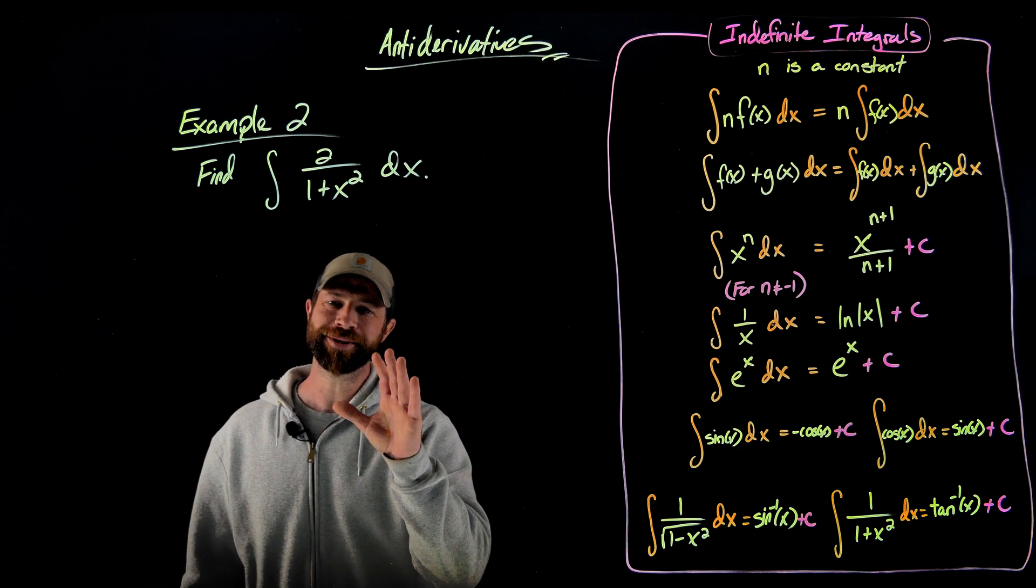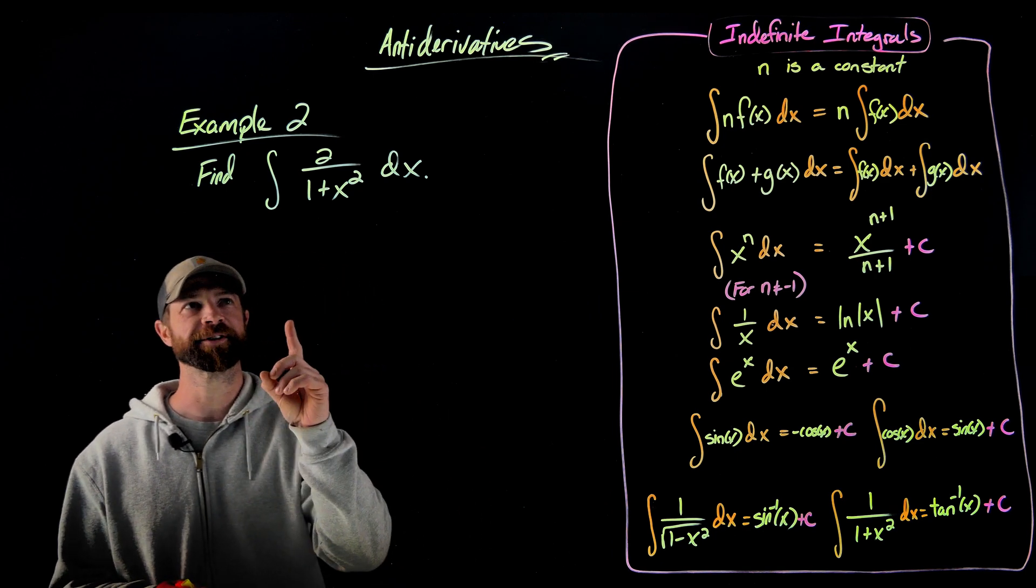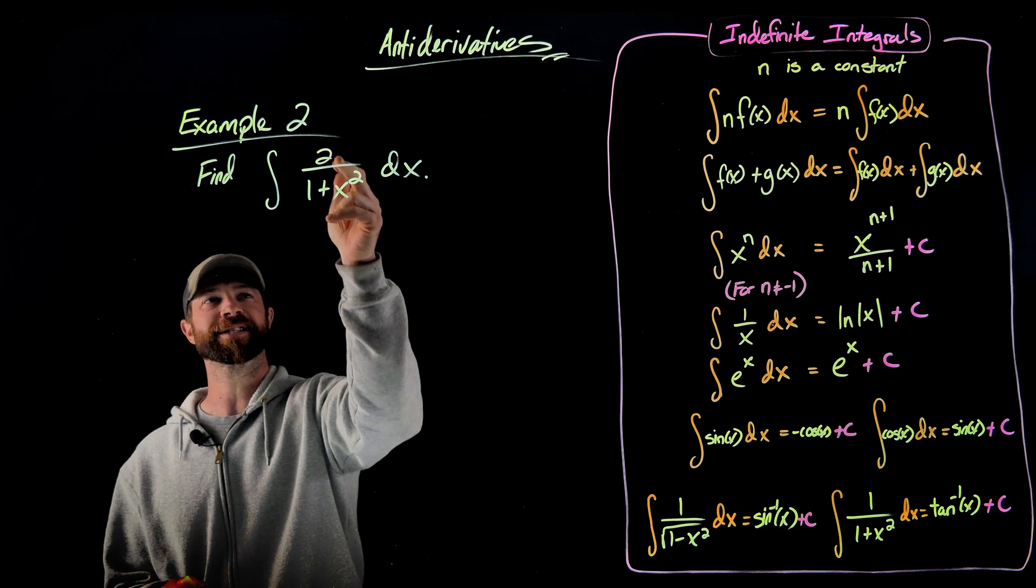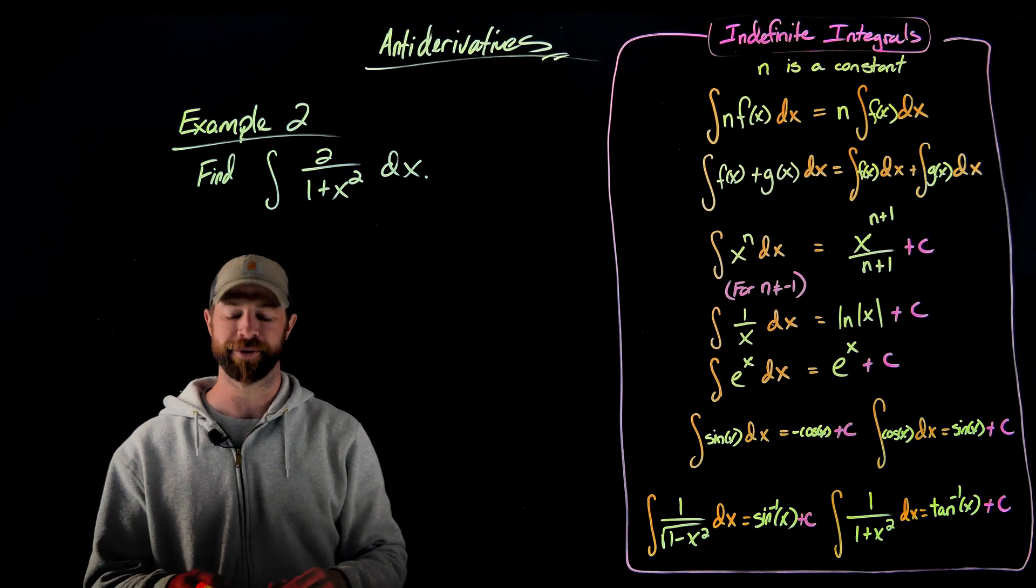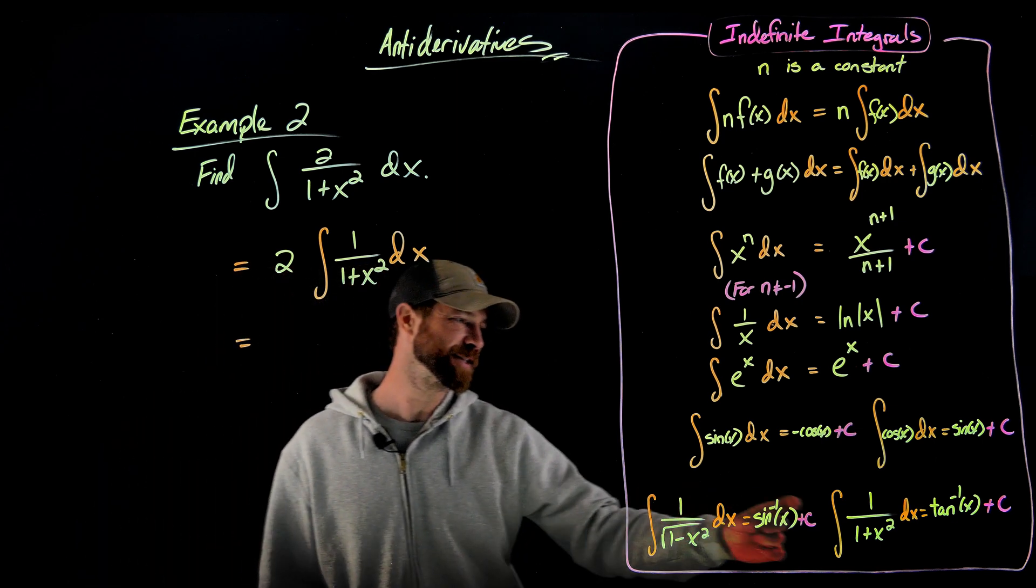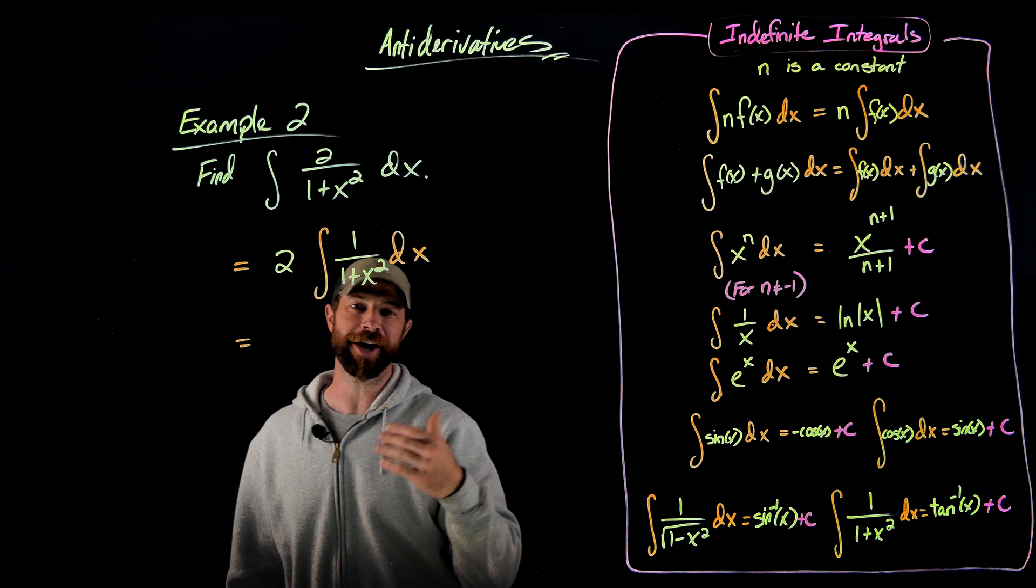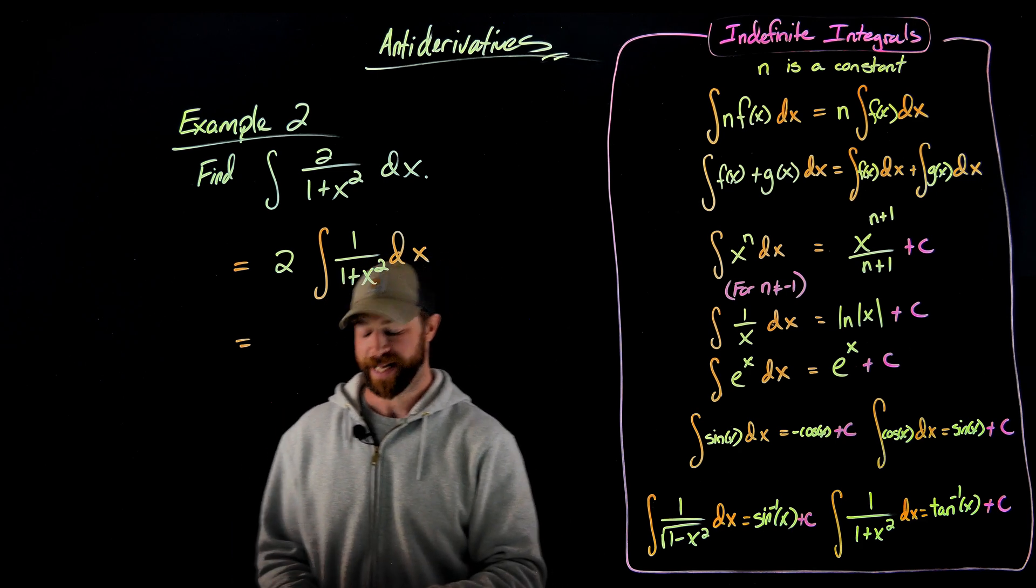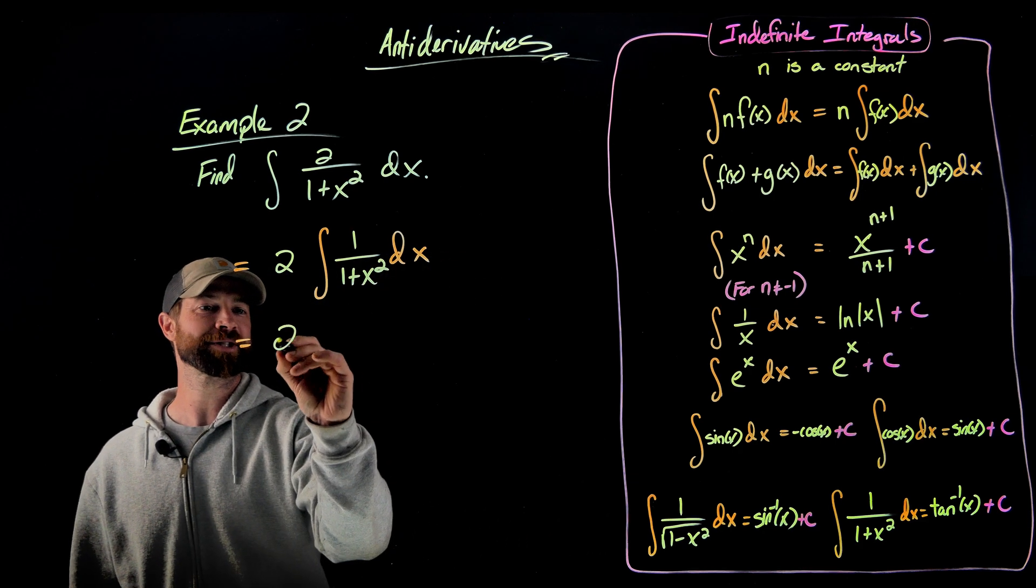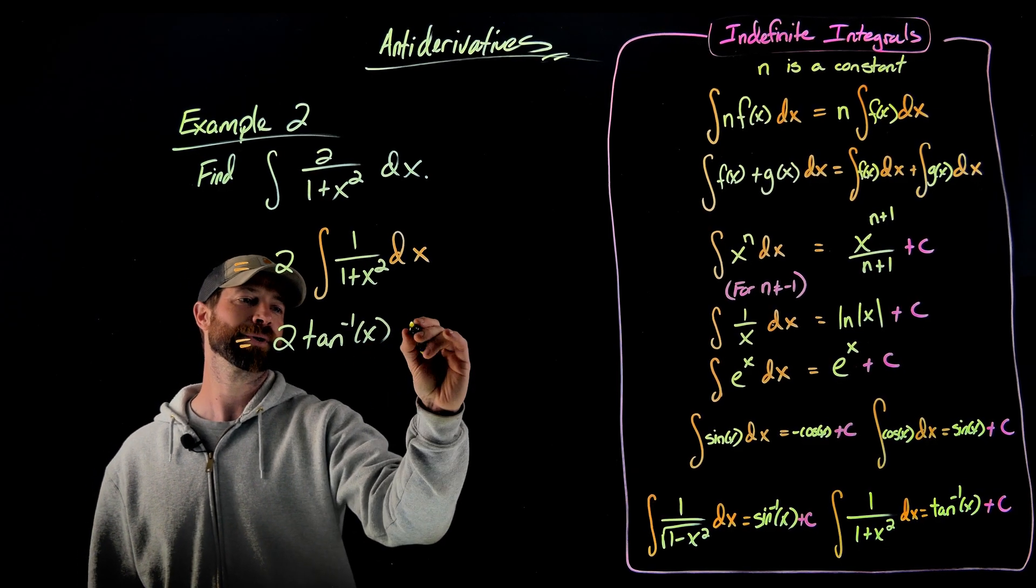Luckily, in this one, we actually can just use one of our more rare integrals. In this case, what I'm first going to do is move this constant of 2 out in front of the integral. Now to integrate this, I'm actually going to use this property right here. This is the derivative right here of the tangent inverse function. And so this actually becomes 2 times the tangent inverse of x plus c.